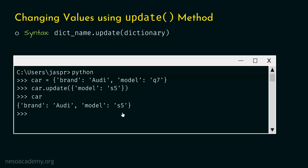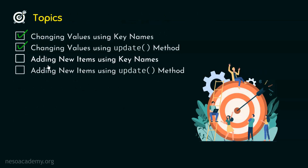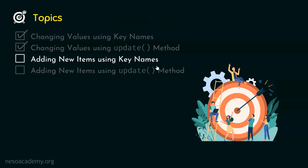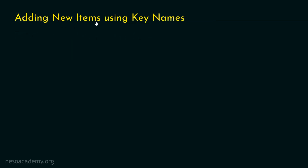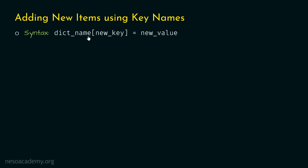I hope the concept of the update method is also clear. Now let's move on to the next topic: adding new items using key names. We can add new items using key names. First, type the name of the dictionary. Then within square brackets, specify the new key. And after the assignment operator, specify the new value. In this way, we can add a new key-value pair.